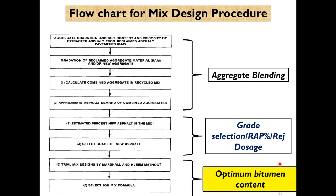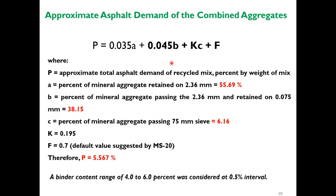The third step is to determine the optimum bitumen content in the mix. The well-known formula for finding approximate asphalt demand in the combined aggregate uses: a = percent of mineral aggregate retained on 2.36 mm (55.69 percent in our case), b = percent passing 2.36 mm retained on 0.075 mm (38.15 percent), c = percent passing 0.075 mm (6.16 percent), k = 0.195, and f = 0.7. Using these default values from MS20, you get P = 5.567 percent as the approximate binder content.